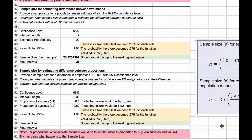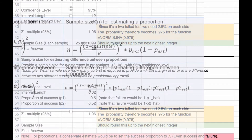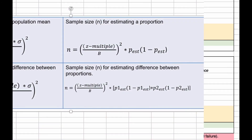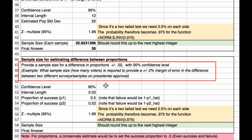Now we take the sample size for estimating differences between proportions. The formula shown to the right has us take the z-multiple divided by the interval length, square it, then multiply by the probability of success in sample one times the probability of failure in sample one, and add to that the probability of success in sample two times the probability of failure in sample two. This applies when, for example, we want to determine how many voters are required to deliver a plus or minus 2% margin of error in the difference between two presidential approval surveys.